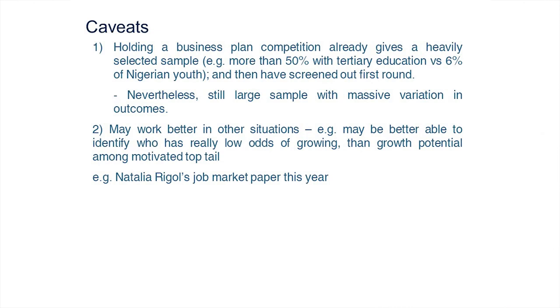Some caveats: this is a competition that already self-selects dramatically — over 50% of applicants have tertiary education versus just 6% of Nigerian youth. The competition design does a lot of the work filtering the bottom tail. And this work suggests it's much easier to figure out who's really bad than who's good — like the venture capital model, or like admitting people to a PhD program: we can filter out many we don't want, but then we have no idea who the winners will be.